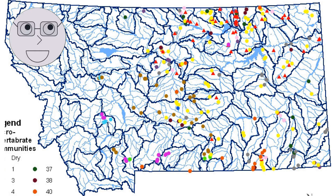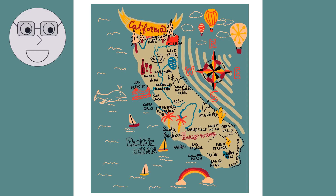Ecosystem diversity refers to the variety of ecosystems that exist on earth. It includes all the different habitats and communities of organisms that make up the biosphere. Ecosystem diversity is essential for maintaining the balance of the earth's systems and for providing us with the resources we need to survive. The visuals show examples of different ecosystems such as rainforests, coral reefs and tundras.